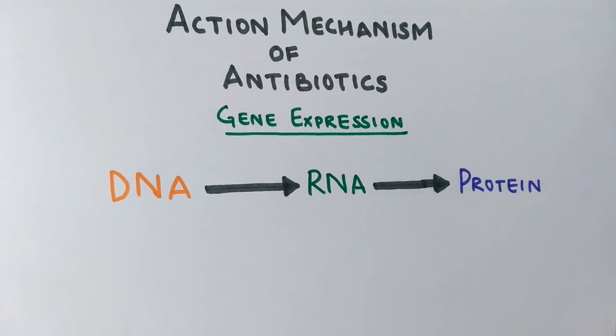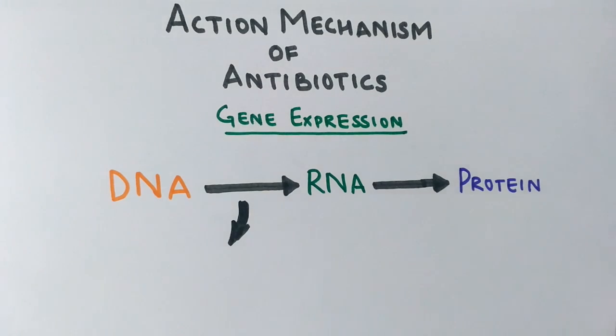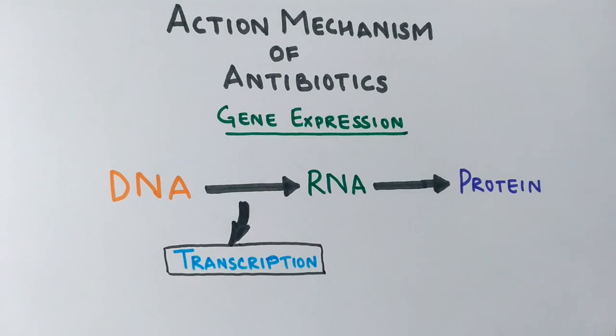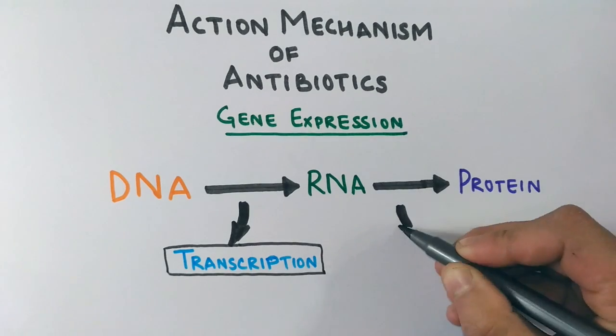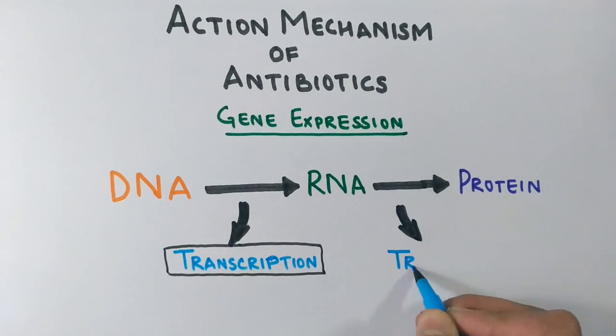The first process in which DNA information is transferred to RNA is known as transcription, and the transfer of information from RNA to protein is termed as translation.